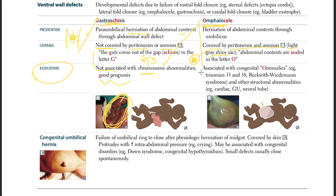Omphalocele: herniation of abdominal contents through the umbilicus. The intestines come out through the umbilicus, but the difference is it IS covered by a gray shiny sac — peritoneum and amnion. Mnemonic: abdominal contents are sealed in the letter O — O is closed. Important: omphalocele is associated with congenital anomalies like trisomies 13 and 18, Beckwith-Wiedemann syndrome, and structural abnormalities like cardiac, GU, and neural tube defects.